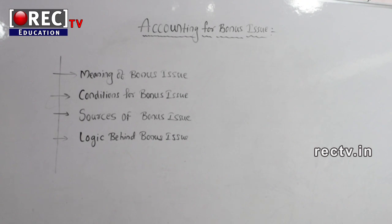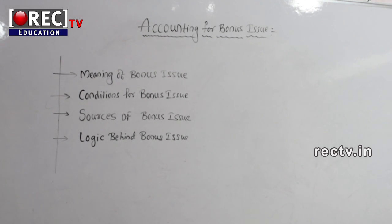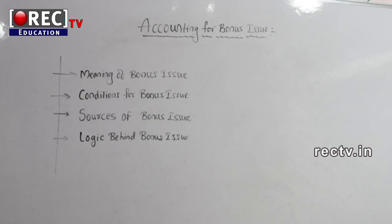Next, let's see what are the sources of bonus issue along with SEBI guidelines — from where we give these free reserves. There are two cases: Case A is for issue of bonus shares to fully paid up shareholders. The sources are: capital redemption reserve (used only for bonus issue), securities premium if realized in cash, capital reserve if realized in cash, and free reserves and surplus, since free profits can be used for any business purpose.